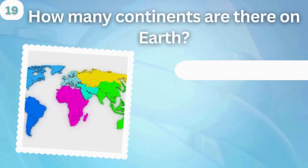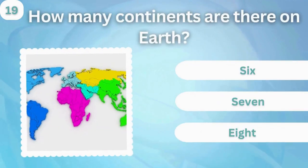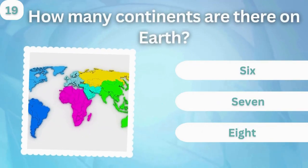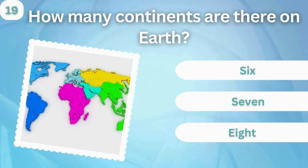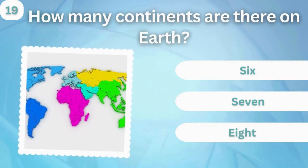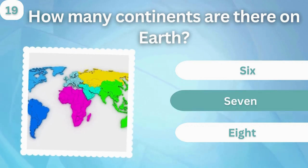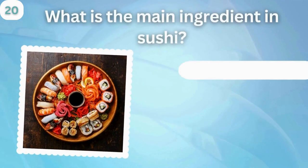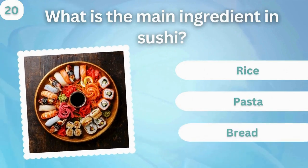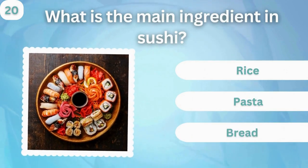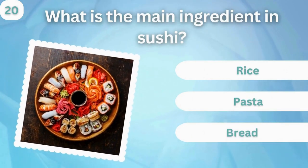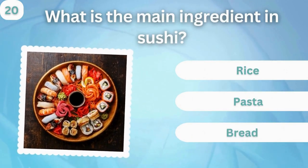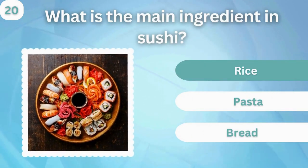How many continents are there on Earth? 6, 7, or 8? 7. What is the main ingredient in sushi? Rice, pasta, or bread? Rice.